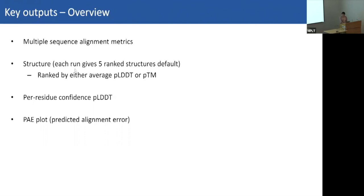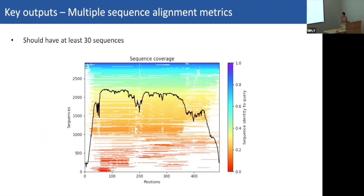By default, five structures are predicted and ranked based on PLDDT for monomeric structures or PTM for multimeric structures. The multiple sequence alignment metric is the first thing to check — you should have at least 30 sequences in the alignment for your protein. For most proteins this isn't a problem; the example shown here has over 2,000 sequences. This is particularly worth checking for bacterial proteins, which may be very diverged.